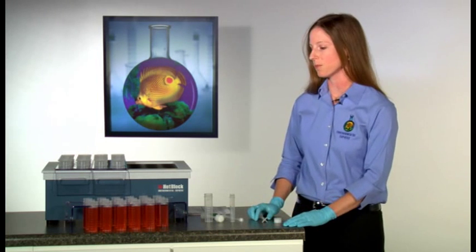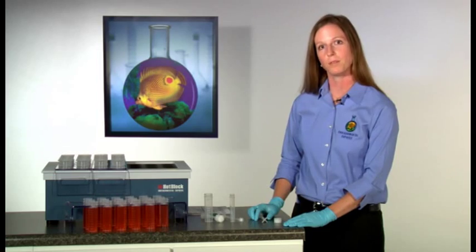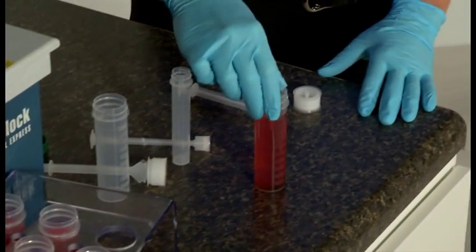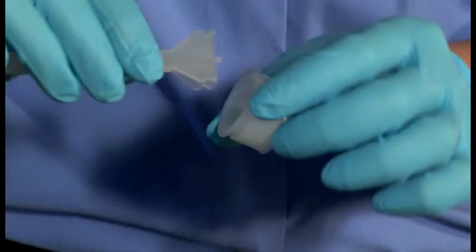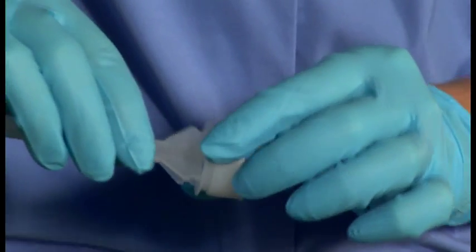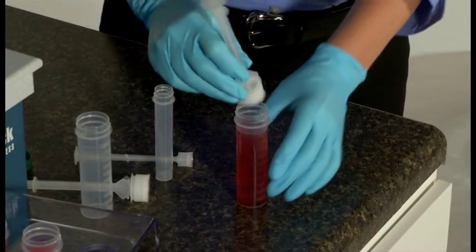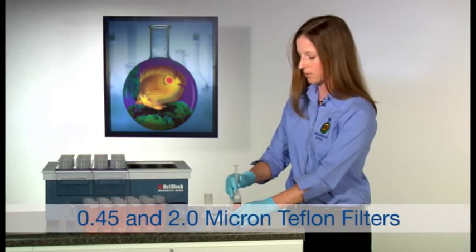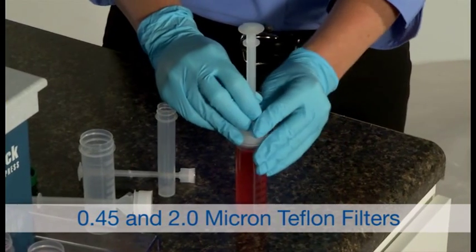To use the FilterMate, bring your samples back up to volume after digesting in a hot block. Next, insert the plunger into the assembly and insert the assembly into your sample tube, applying a firm and steady pressure.